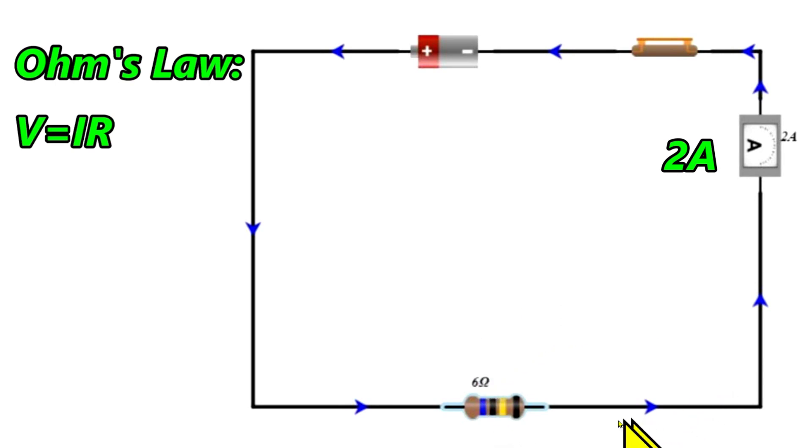So what we need to do here is we need to figure out how many volts this circuit has. So let's go over here to Ohm's Law. Volts equals amps times ohms, and we see there is 2 amps and 6 ohms. So how many volts do we have? How many volts does this battery have? It has 12 volts.